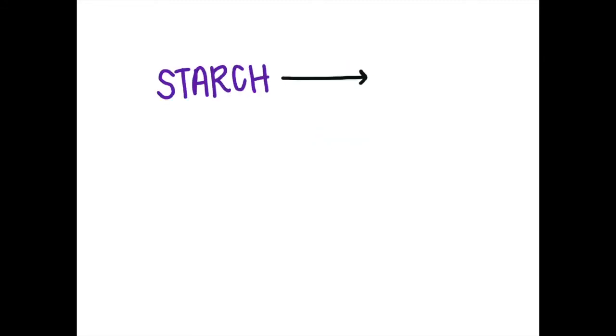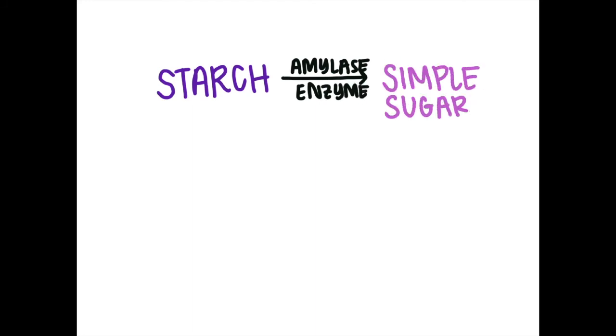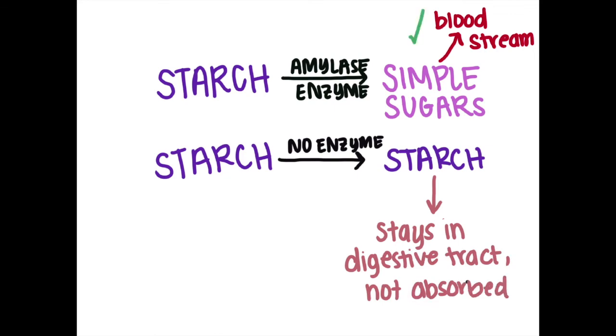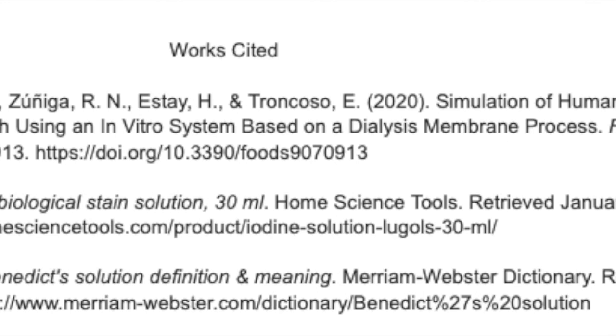In conclusion, we can use the dialysis tube experiment to show that when starch is broken down by the enzyme amylase in the small intestine, the simple sugars resulting from the breakdown of starch are free to move into the bloodstream. When there aren't enzymes, starch will stay inside the small intestine and won't be broken down, so nothing will be absorbed into the bloodstream. Check out these sources for more information.